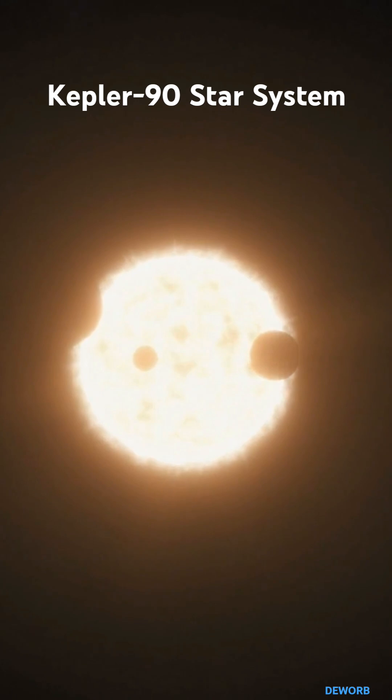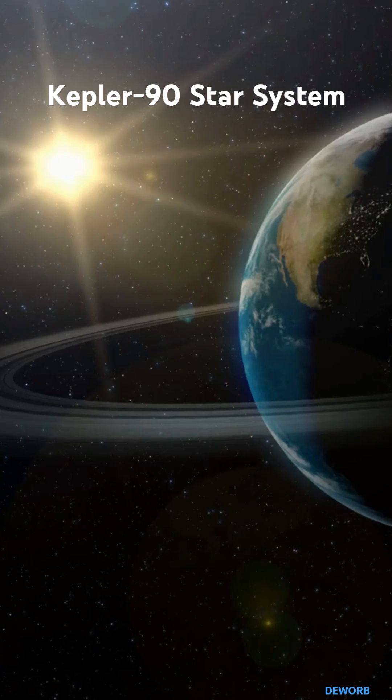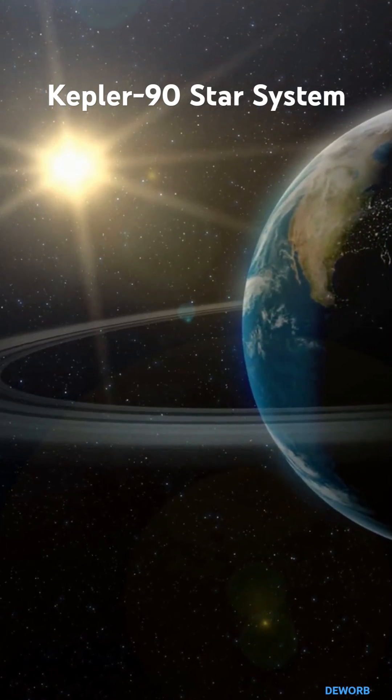What's fascinating is that these planets orbit a star similar to our Sun, Kepler-90, but they're packed in tightly, with the closest planet, Kepler-90b, completing an orbit in just 14.4 days.